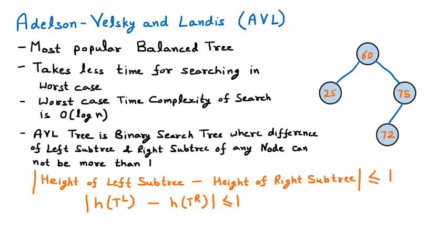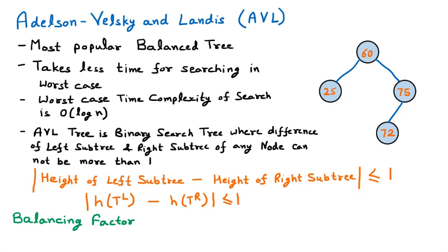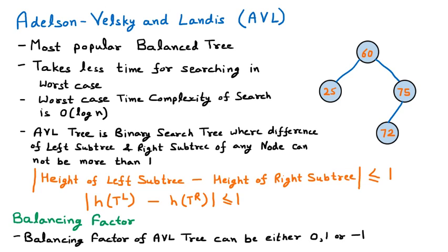This is called the balancing factor of the AVL tree. The balancing factor is: height of left subtree minus height of right subtree, which should be less than or equal to 1. The balancing factor of an AVL tree can be either 0, 1, or -1. If we take height of left subtree (TL) minus height of right subtree (TR), and the result is 0, 1, or -1, then it is an AVL tree. We are now going to check whether a given tree is AVL or not.